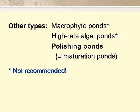There are a few other types of ponds, such as macrophyte ponds and high-rate algal ponds, but these can't be recommended for general use. There are also polishing ponds, and these are essentially maturation ponds used to improve the quality, and commonly the microbiological quality, of the effluent from a conventional electromechanical wastewater treatment plant.